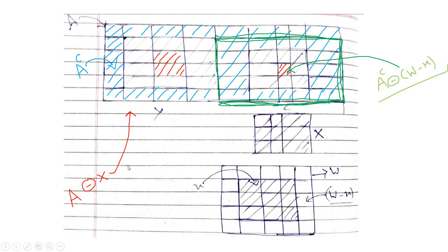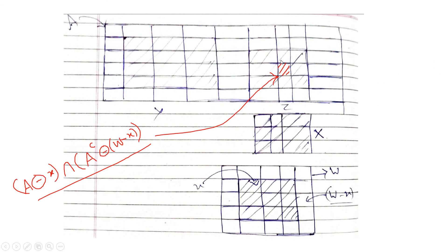Now take the intersection of: (A eroded by X) and (complement of A eroded by W minus X). The result is only the one correct location where our structuring element completely fits. This intersection is exactly what the hit-or-miss transformation is: A erosion with X, intersected with the complement of A erosion with W minus X.